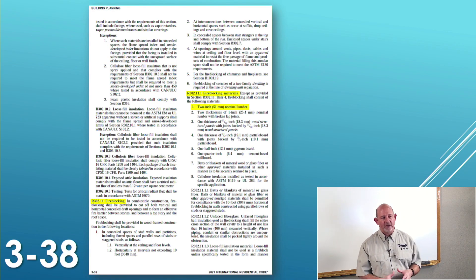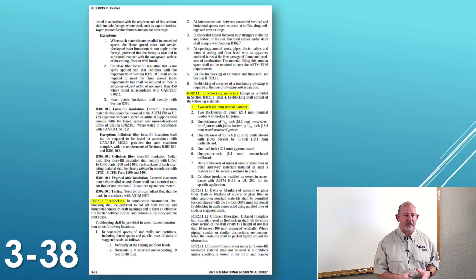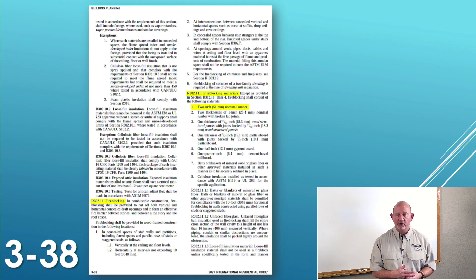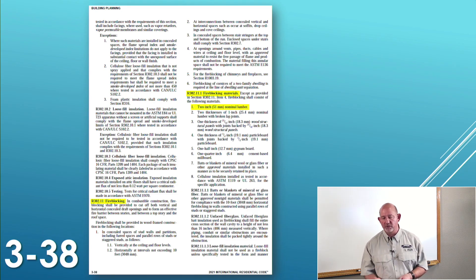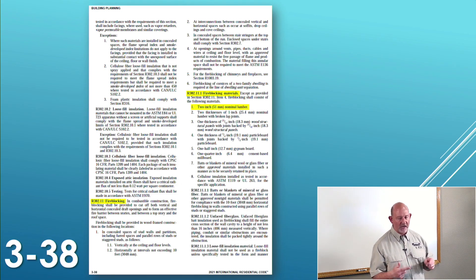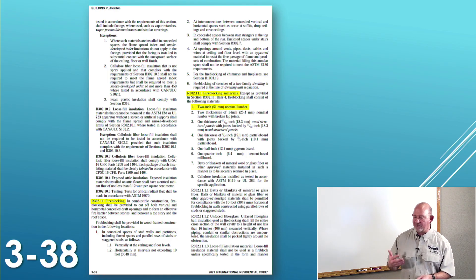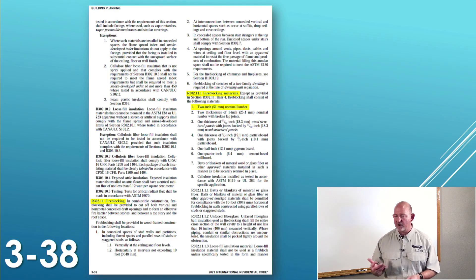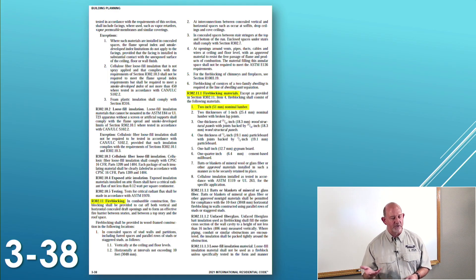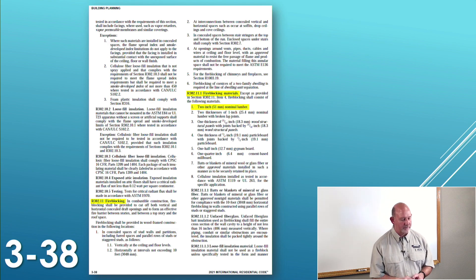Let's move on — page 3-38, bottom left. We're still R302. Stop. 302 is still fire-resistant construction. 302.11 is fire blocking. So this is fire blocking in regard to fire-resistant construction.